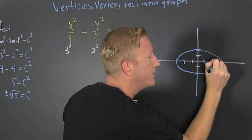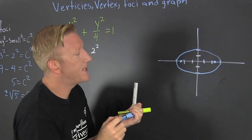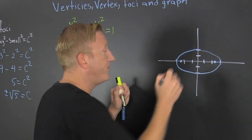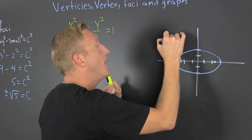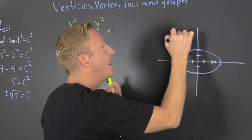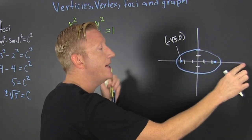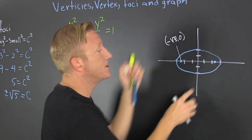It's going to lie right about there, right about there. If we were going to label these points, that would be minus the square root of five and zero. Why? Because the foci lie on the major axis. The small one is the minor axis. This one over here is plus the square root of five and zero.